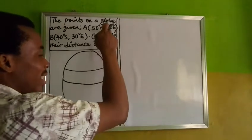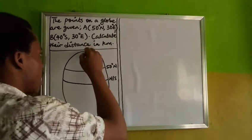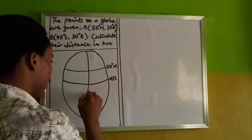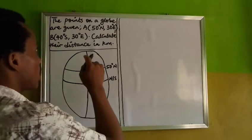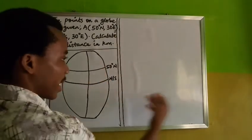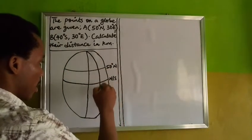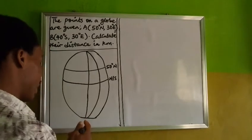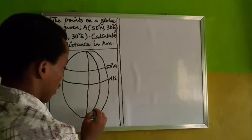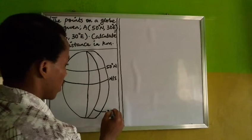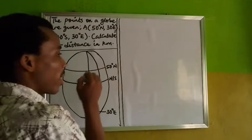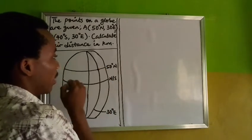The next is the longitude, which is 30 degrees east. First I draw the main longitude, which is the Greenwich Meridian. Then 30 degrees east — since east is on the right-hand side, the line will be here, at 30 degrees east. The point of intersection is this point here for A. So this is A.